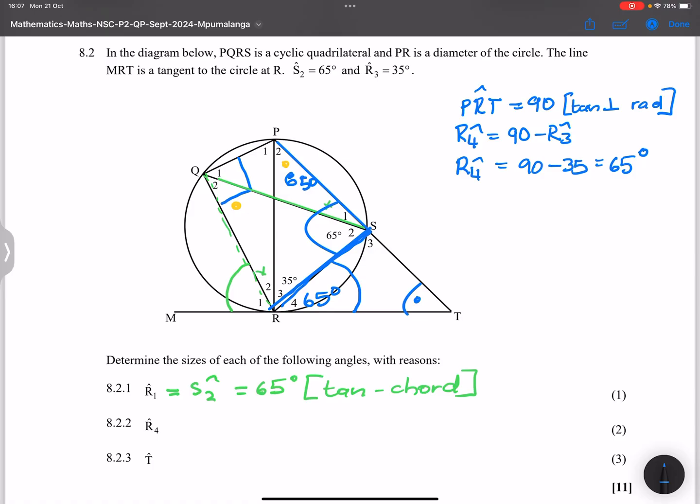Now, if we look at triangle PRT, we'll have a 90 degree there, we'll have 65, and so that means that would also be 35. But let's do it nicely, ladies and gents. So we say in triangle, in fact, let's say R4 is equal to P2, which is 65 degrees, and that's the tan chord theorem.